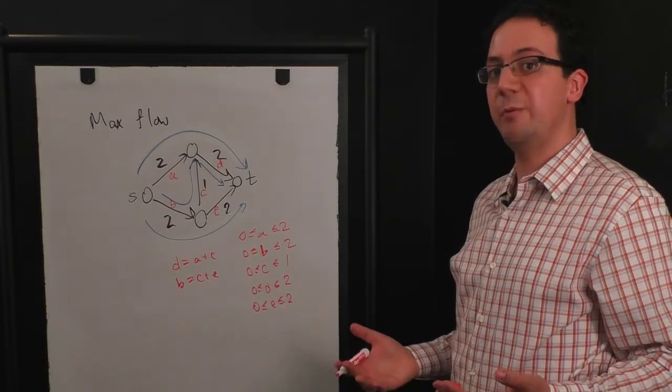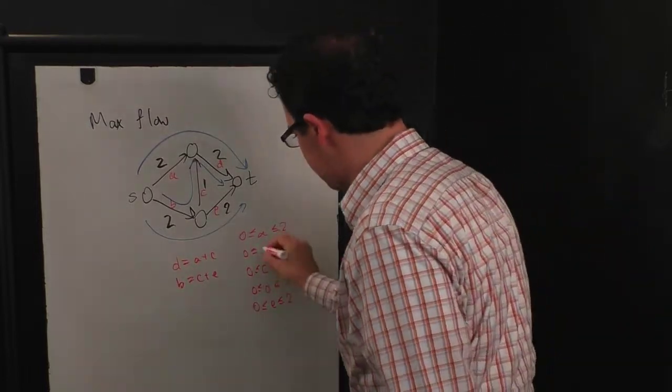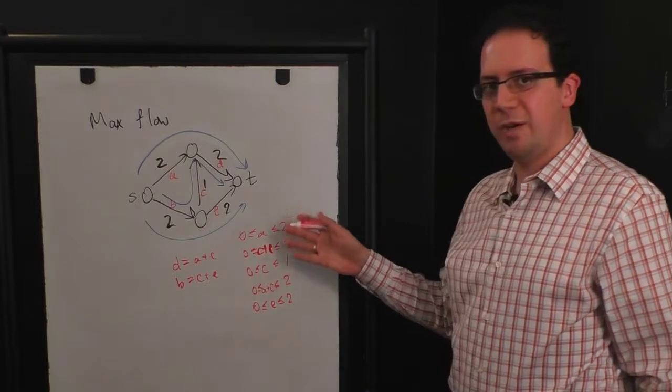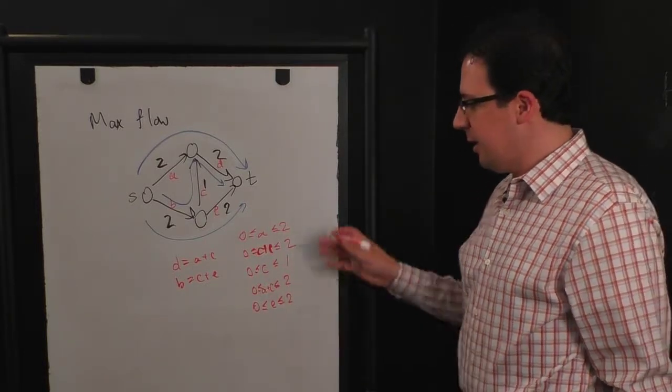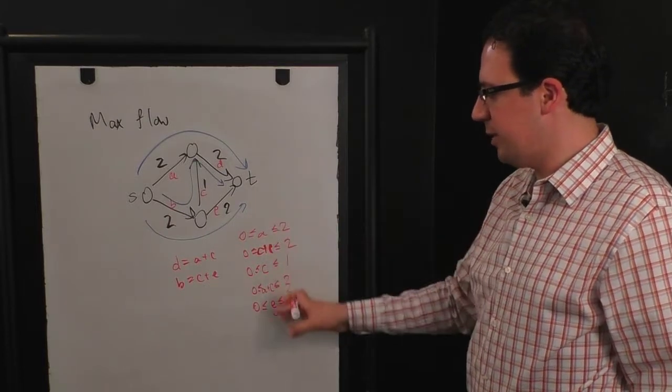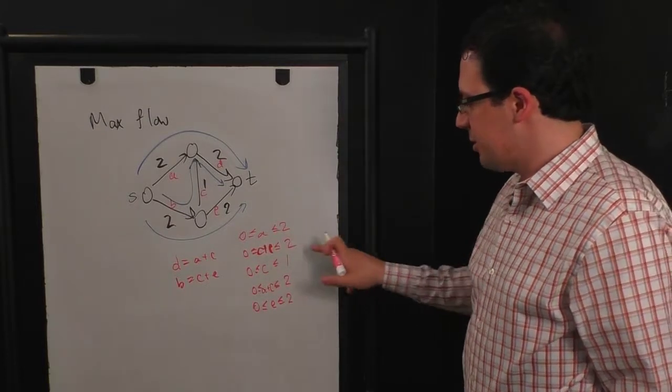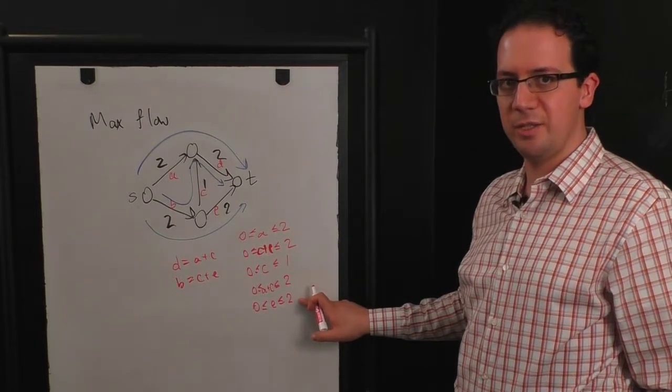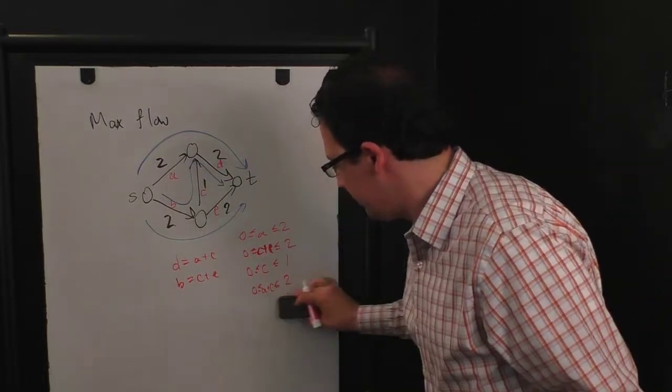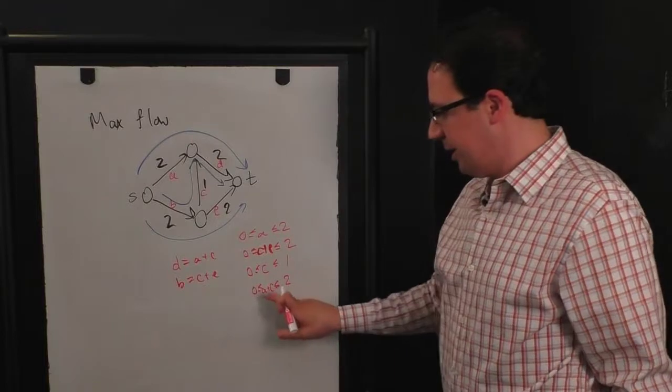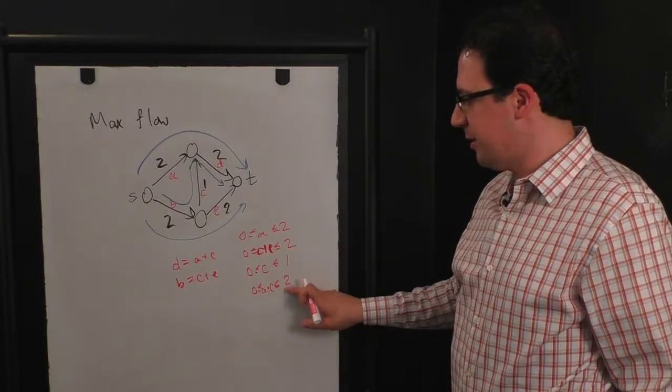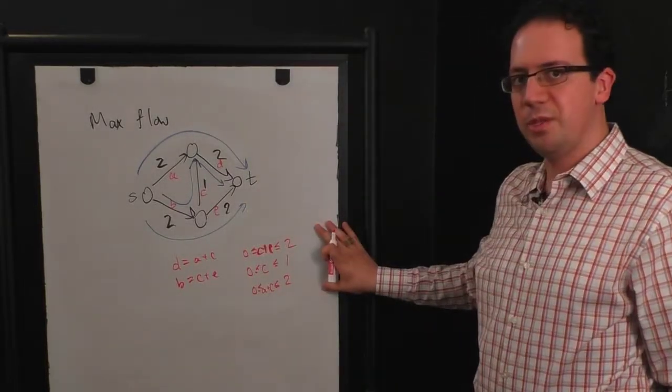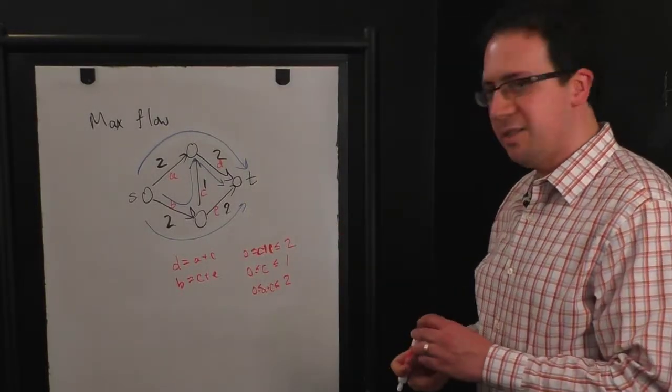So we can now substitute these in and see what we're really working with here is just a three variable problem, which is nice because then we can visualize it with a graph. So we've now eliminated the variables B and D. We have three variables here. We can also eliminate some of these constraints. For example, we already know that all of our variables are non-negative. So if C plus E are non-negative and they're at most two, then that already implies that E is at most two. So we might as well ignore this constraint. That was redundant. And similarly, if A plus C is at most two and they're non-negative, then that also implies that A is at most two. So we now have three variables and three constraints. And let's see what this looks like.